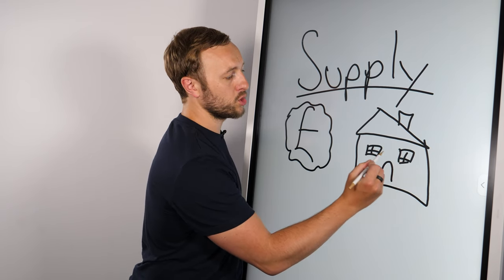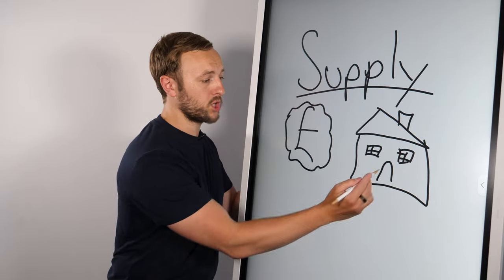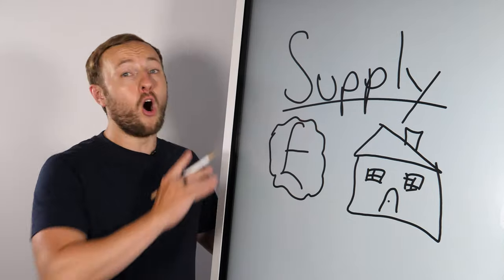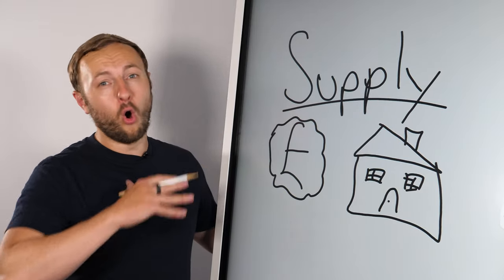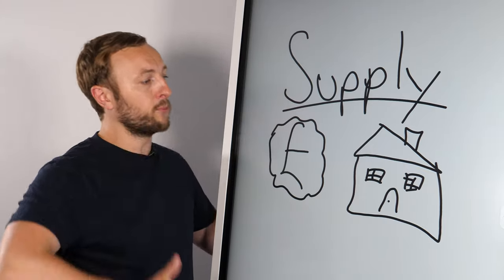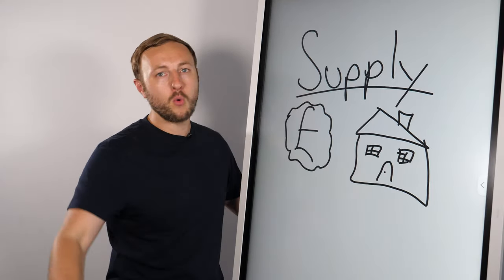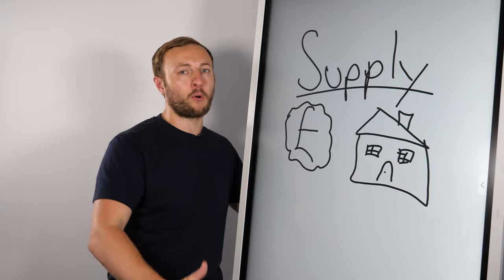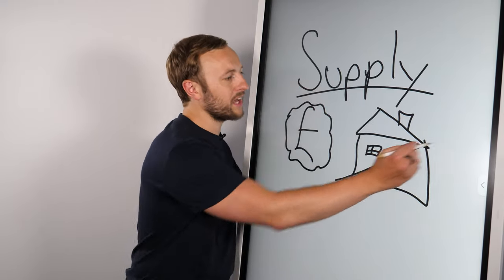So mainly due to the UK's really restrictive planning portals and planning issues, it is archaic. Like it is so old school. The government makes it so difficult for people to develop and build their own property or build 10, 20, 30, 40, 50 properties. And because of this lack of supply, there is a massive housing shortage.